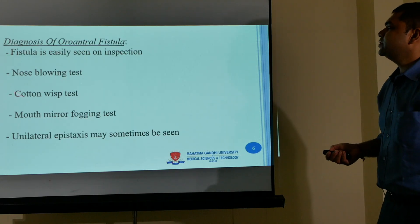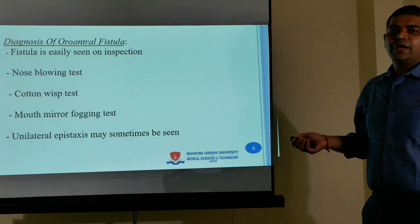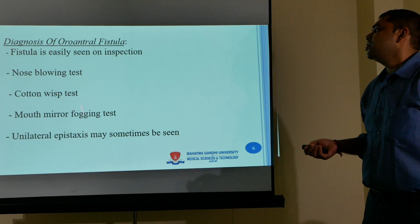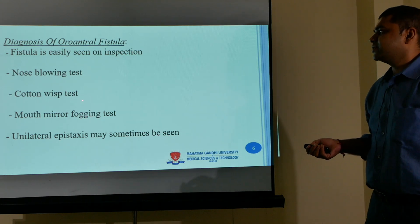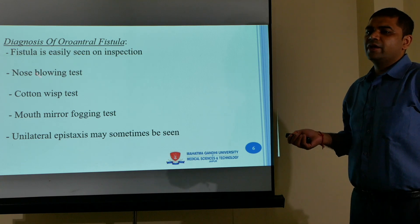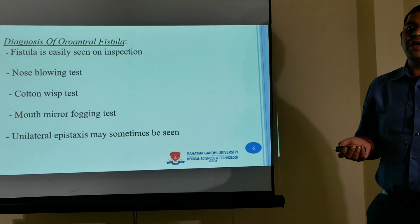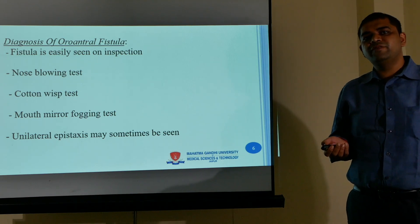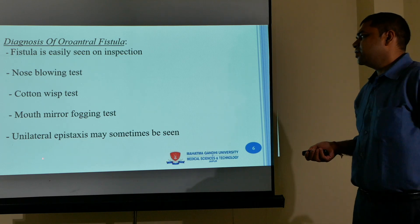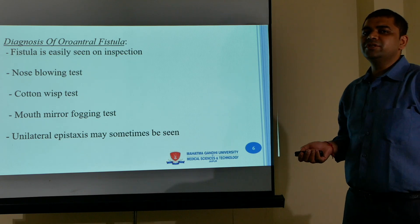Diagnostic tests: first, blowing of the nose — if air comes from the mouth it indicates communication between the nasal and oral cavity. Second, cotton whip test — place cotton in the extraction socket; movement of the cotton indicates oral-antral fistula. Third, mouth mirror fogging test — place a mouth mirror in the extraction socket and ask the patient to blow through the nose; fogging on the mirror indicates communication. Unilateral epistaxis may also be seen.